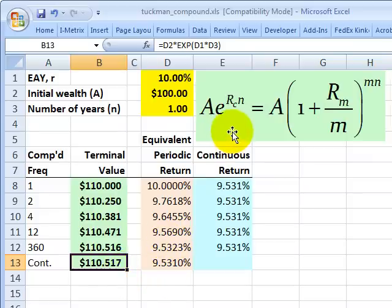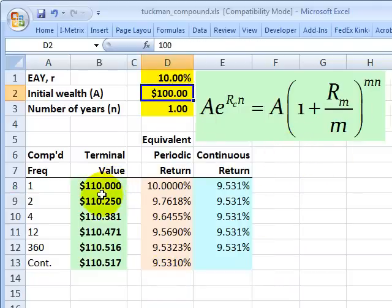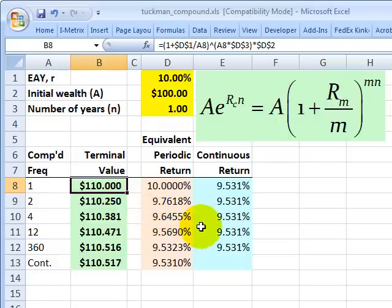Now another way to look at this to really solidify an understanding of this is to take here this terminal value of $110 and solve for what would be the equivalent returns under discrete compounding. So if we start with 100 at the beginning of the year, and we end with 110, that implies different rates or effective annual rates based on our frequency of compounding.